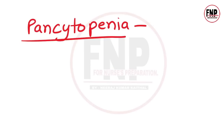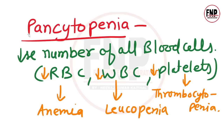Pancytopenia ka matlab hota hai hamare sharir ki sabhi prakar ki blood cells ki sankhya mein kami hona. Agar red bone marrow mein fatty tissue ka deposition badh jaaye jisse RBC, WBC aur platelets ka production na ho paye, to ye condition pancytopenia kehlati hai. Sirf RBC kam hone par anemia; WBC kam hone par leukopenia; aur platelets kam hone par thrombocytopenia kehte hain.